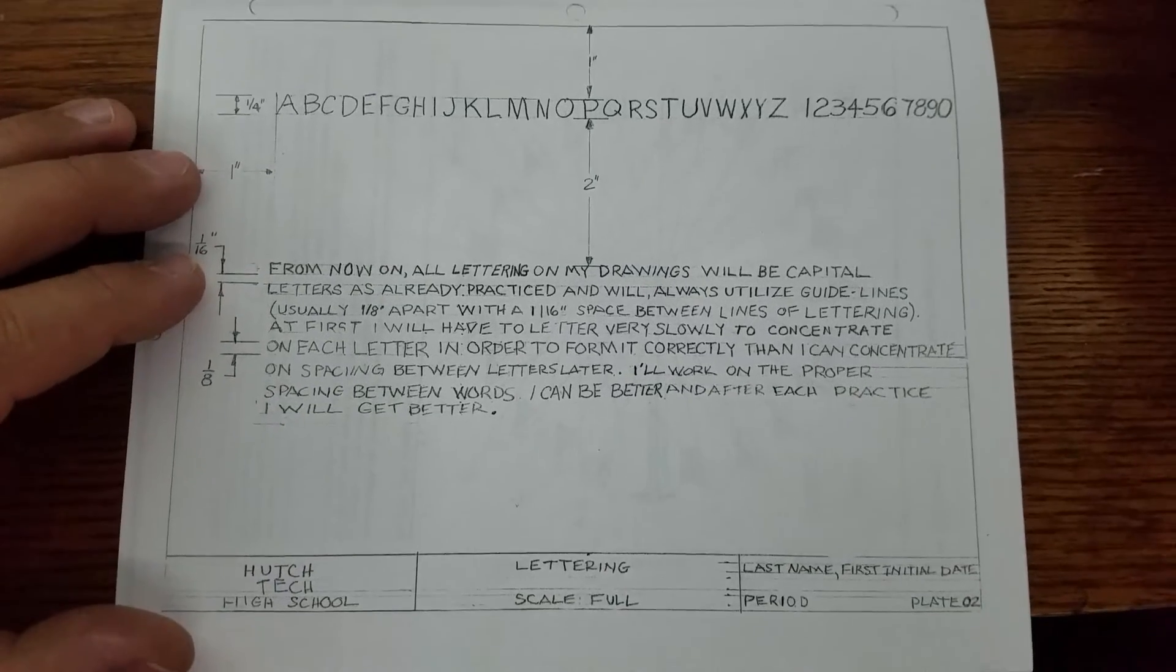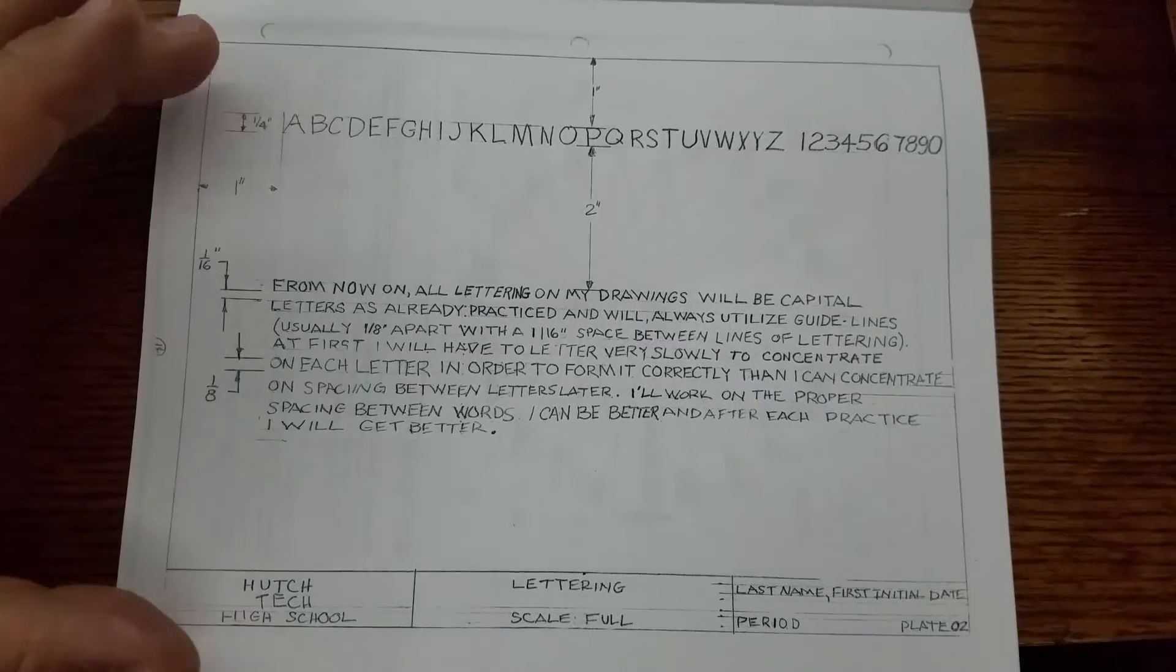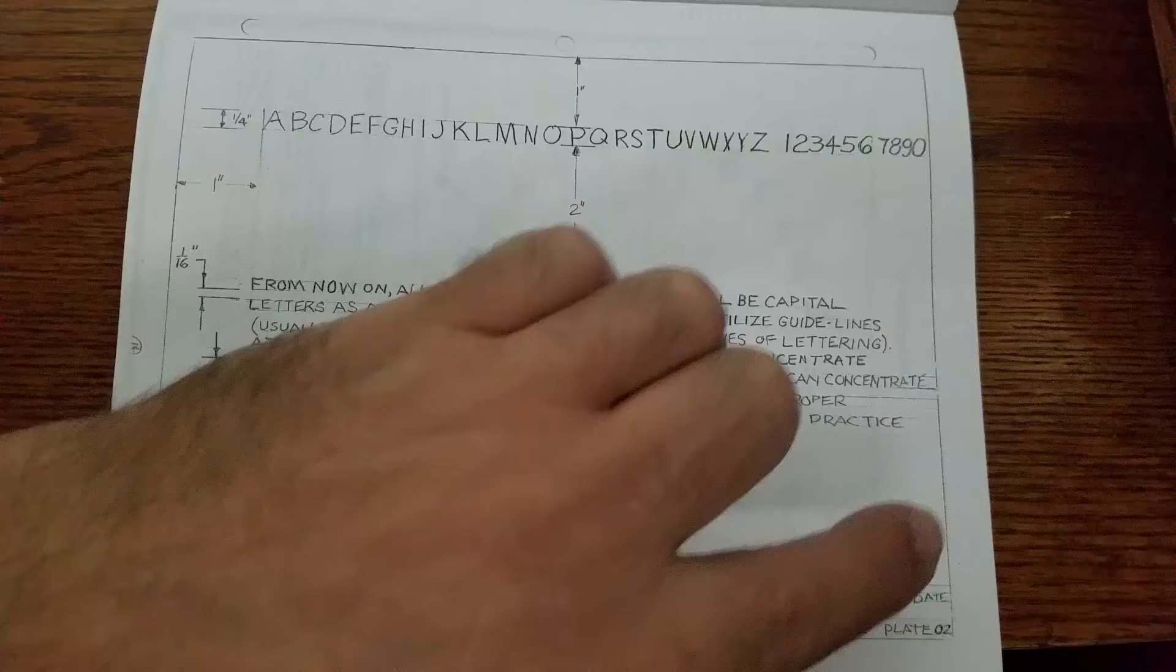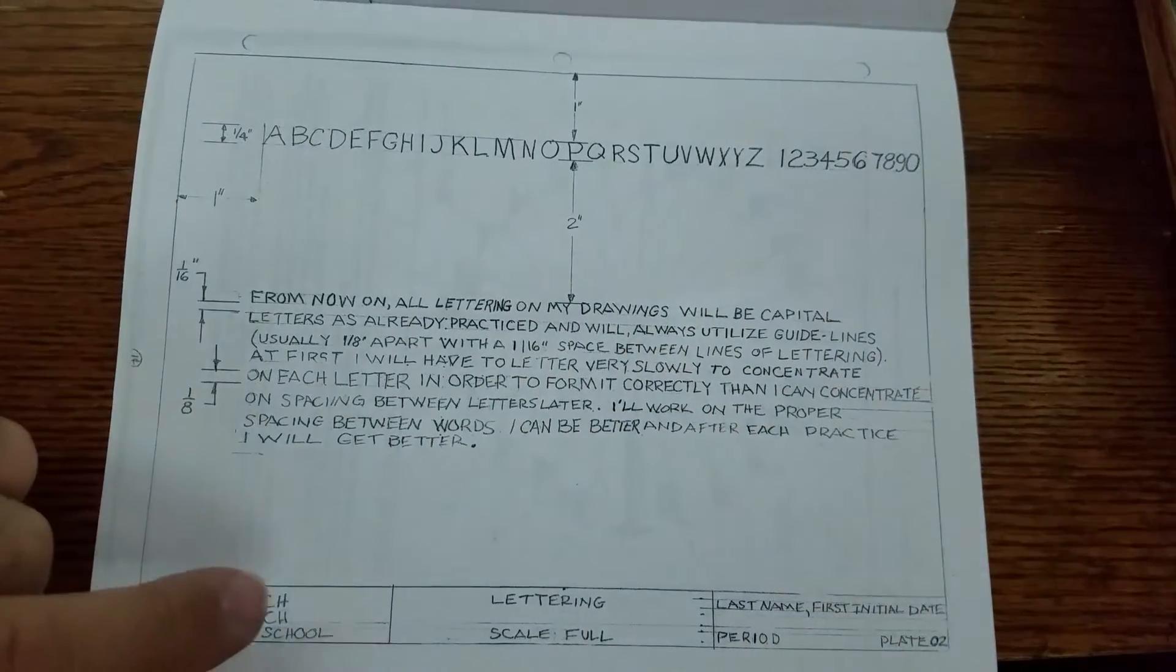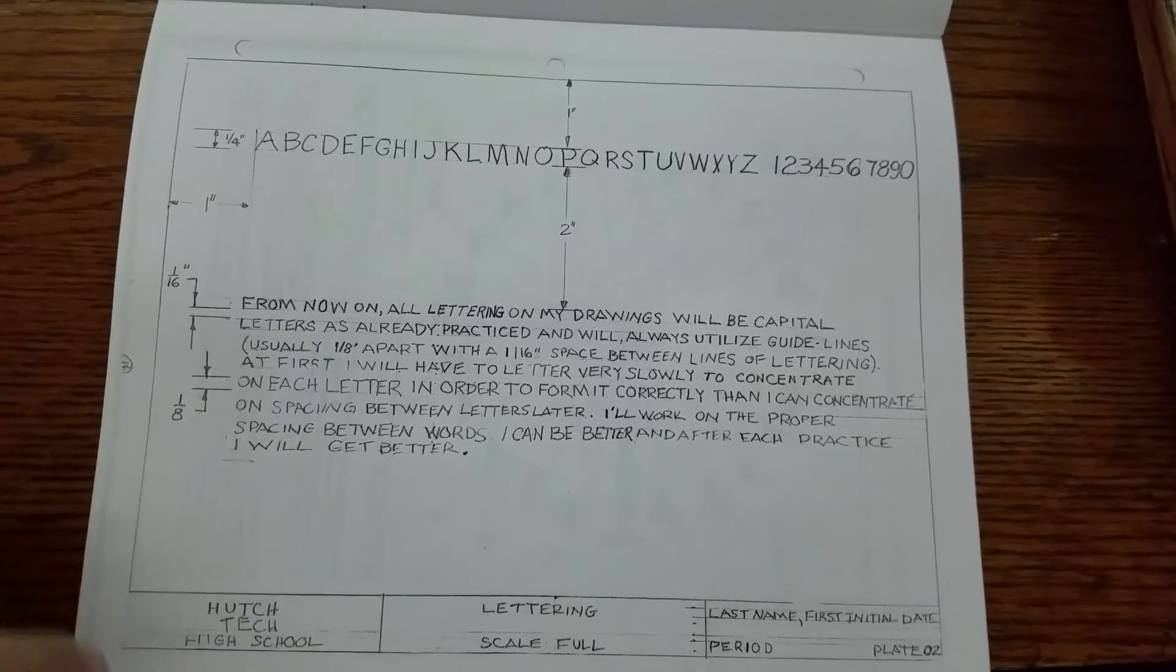In the following video I want to just go through and explain a couple things about plate 2. Plate 2 is very similar to plate 1 where you're gonna start with creating your overall border, your title block, and then putting all your information in your title block.